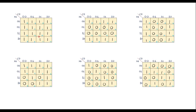Consider a Kmap where all 16 cells contain 1s. We can group all 16 in a single group, and the value of this group is always 1.